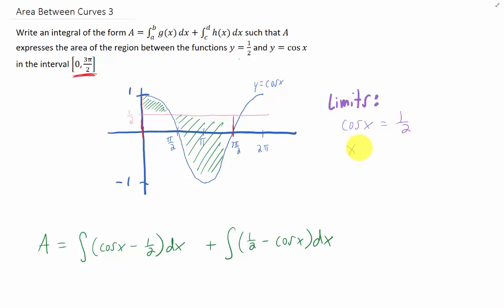You have to know something about your unit circle. The cosine function equals 1/2 at π/3 and 4π/3. But fortunately, 4π/3 is outside of the region we're interested in, so we're only interested in π/3. π/3 is going to be the x value right in here. So our limits of integration are the x values for this region, which go from 0 to π/3. And our limits of integration for this integral are the x values in this region, which go from π/3 to 3π/2.